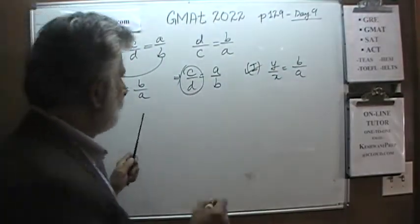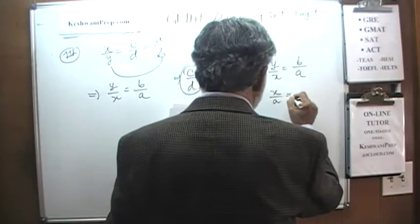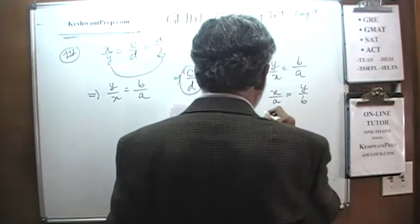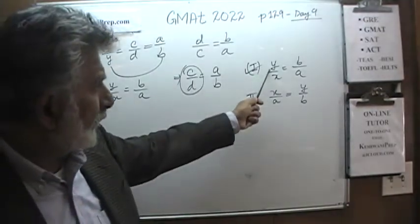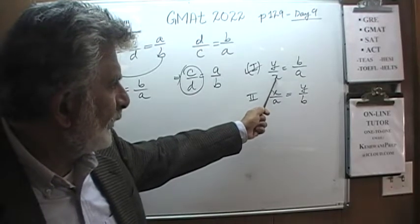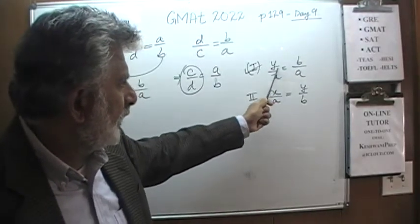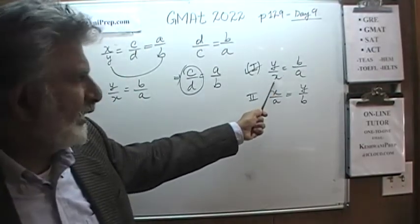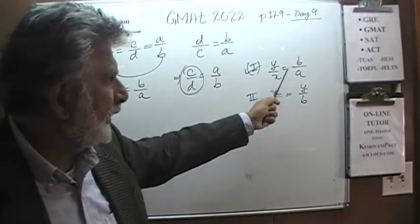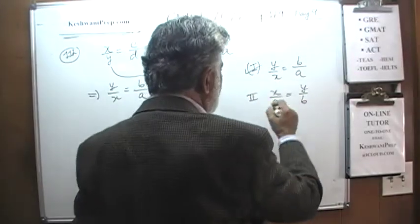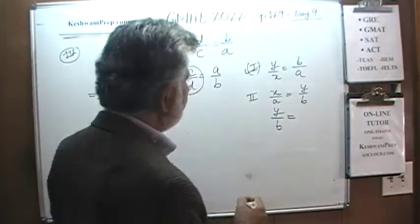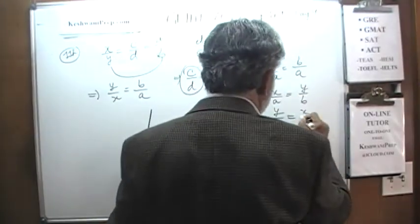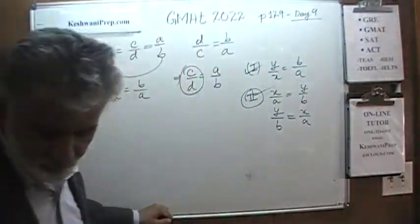Statement two says X over A equals Y over B. Now that we have established statement one is correct — Y over X equals B over A — all they are doing is rearranging: moving X up, moving Y down, moving B down, moving A across. This is simply a rearrangement of statement one by cross-multiplying. Statement two is also true.